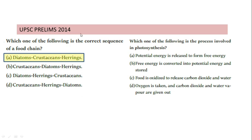Another UPSC 2014 question asks: which one of the following is the process involved in photosynthesis? Option A — potential energy is released to form free energy — is not correct. Option C — food is oxidized to release CO₂ and water — is incorrect because photosynthesis consumes CO₂ and water, it doesn't release them. Option D — oxygen is taken in and carbon dioxide and water vapors are given out — is also incorrect because oxygen is released, not taken in. Option B — free energy is converted into potential energy and stored — is correct, as energy is stored in the form of biochemical energy.